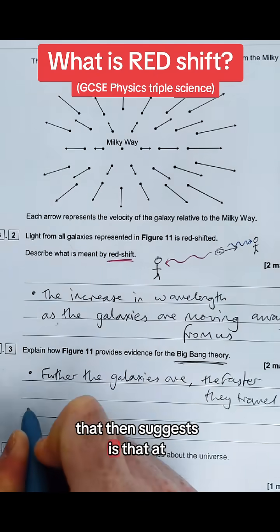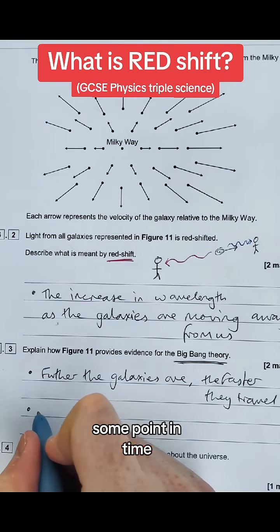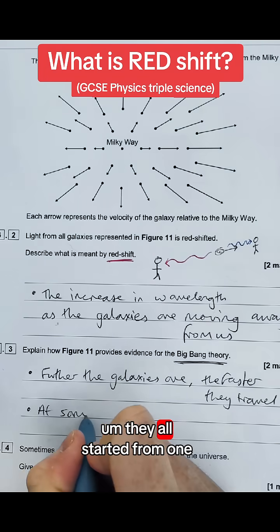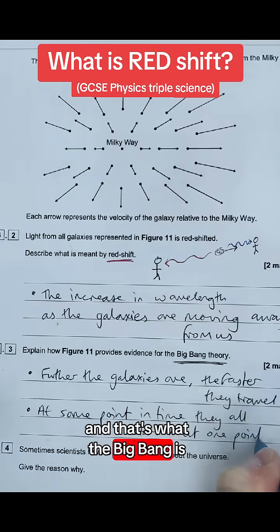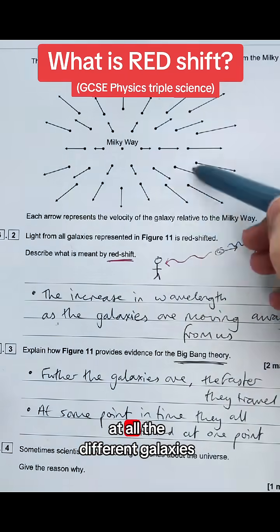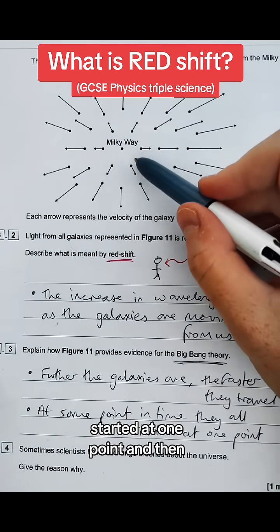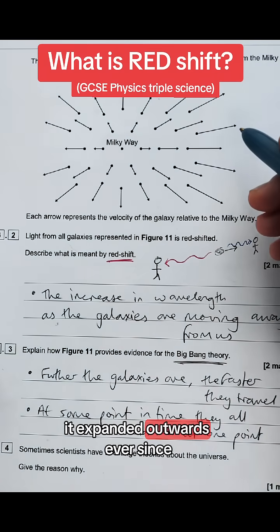What that then suggests is that at some point in time they all started from one point, and that's what the Big Bang is. It's the idea that the whole universe and all these different galaxies started at one point and then expanded outwards ever since.